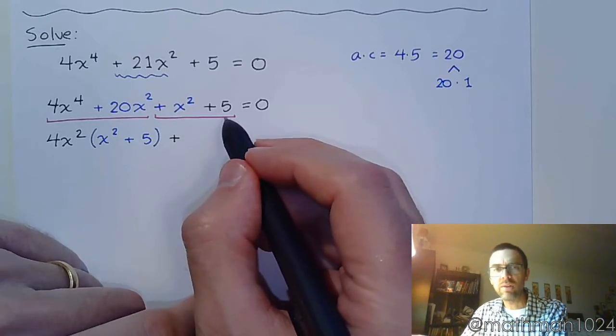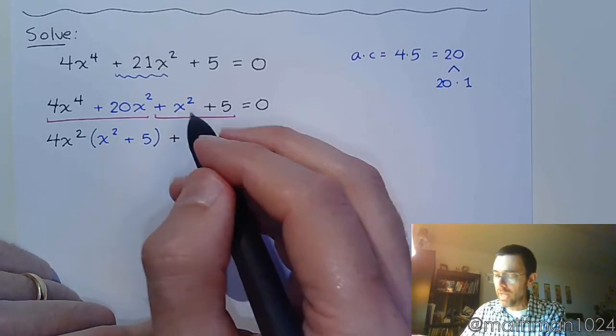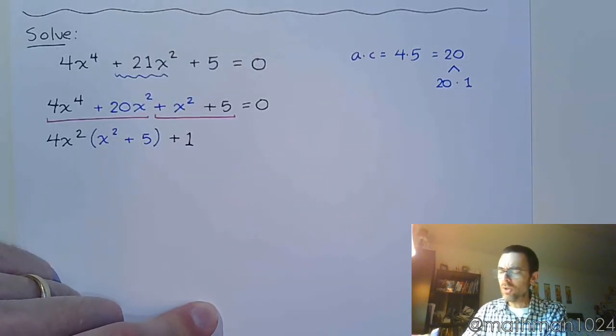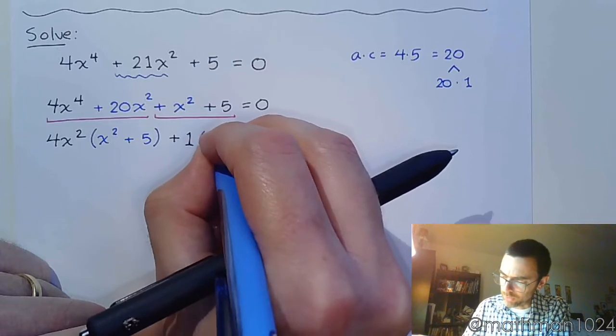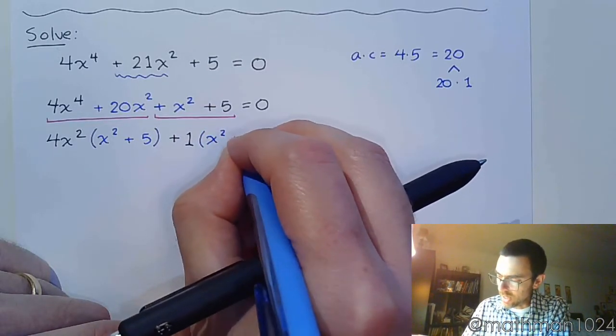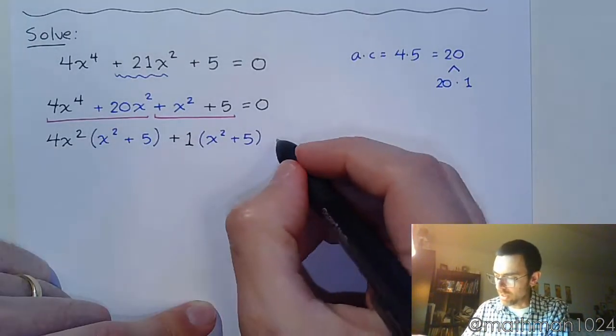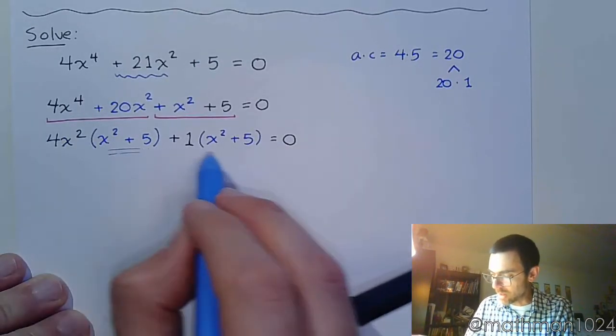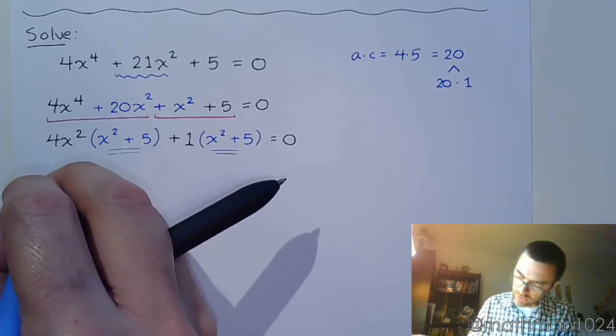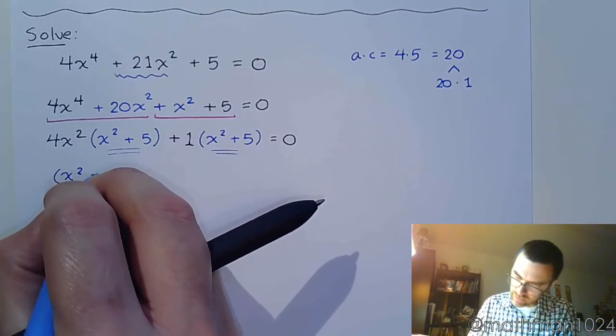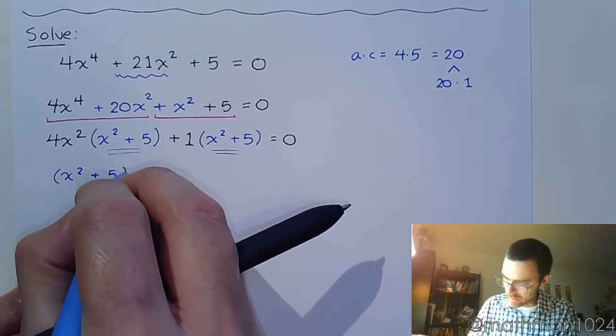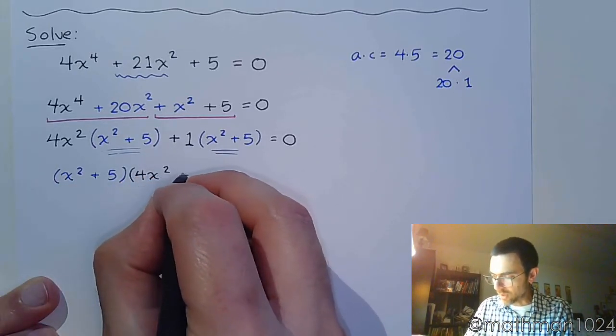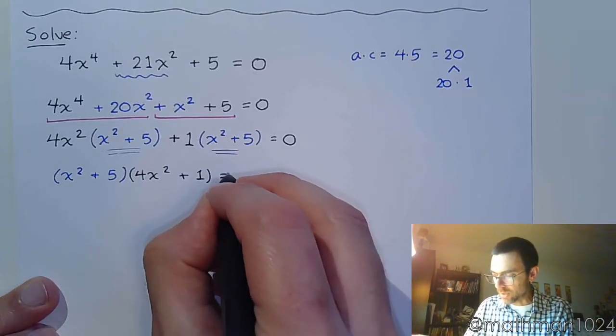And I factor that out, leaving me with x² + 5. And then in the second group, notice that x² and 5 don't really have anything in common except for 1, right? Now you don't need to write the 1. I find it incredibly helpful to write that so that in our next part of factoring by grouping, we don't forget that the 1 is there. So this gives me (x² + 5)(4x² + 1) = 0.